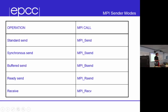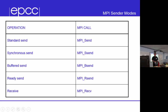The MPI sender modes are: MPI_SEND (standard, which we won't use because it's ambiguous), MPI_SSEND (synchronous send, which you should use), MPI_BSEND (buffered/asynchronous), and MPI_RSEND (ready send, which you shouldn't use). Receive is MPI_RECV. For this course, you should use MPI_SSEND and MPI_RECV.